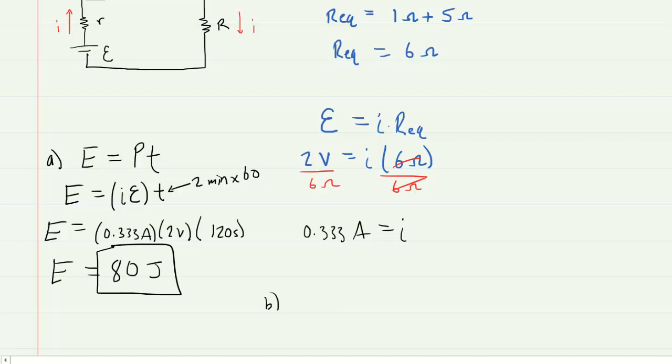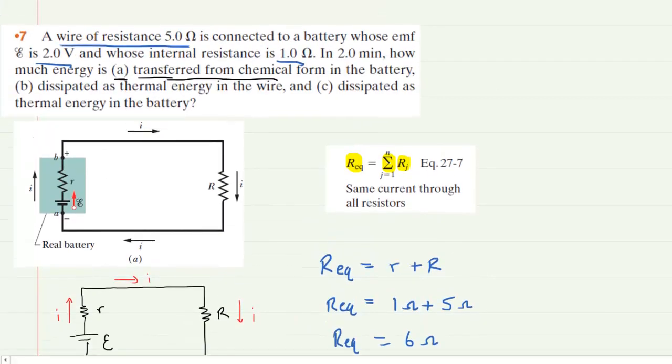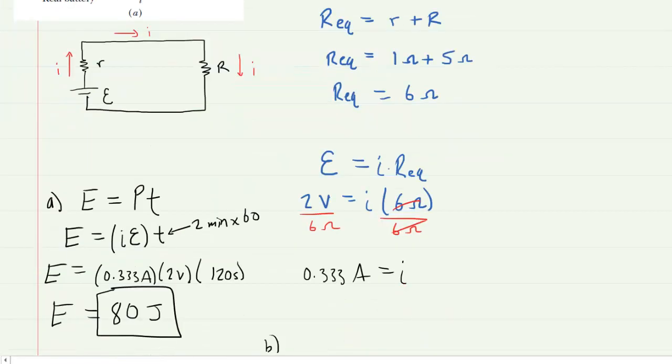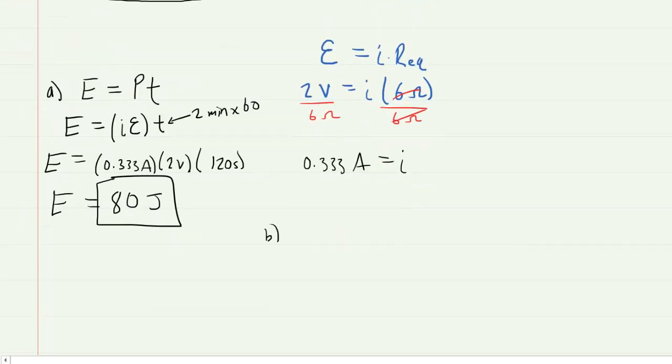We can move on to part B, which asks us to determine the total energy dissipated as thermal energy in the wire. Now remember, the wire had a resistance value of uppercase R. So if we want to calculate the energy dissipated as thermal energy in the wire, we can use the same kind of idea. We say energy is equal to power times time.